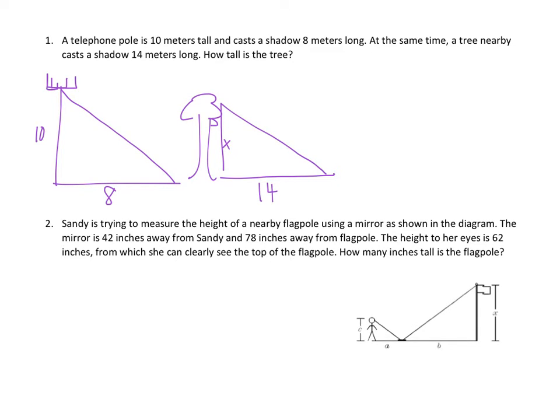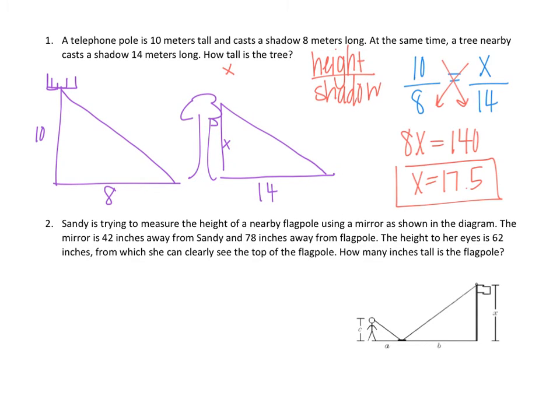So I'm choosing to make these both into triangles. I'm looking for the height of the tree, so I call it X. And again, we're going to go with height over shadow equals height over shadow. Something like 10 over 8, height of the telephone pole over shadow of the pole, equals height of the tree over shadow of the tree. Go ahead, take a minute, pause the video, cross multiply and solve. When you're done solving, play the video again to see if you're correct. I found the height of the tree to be 17.5.